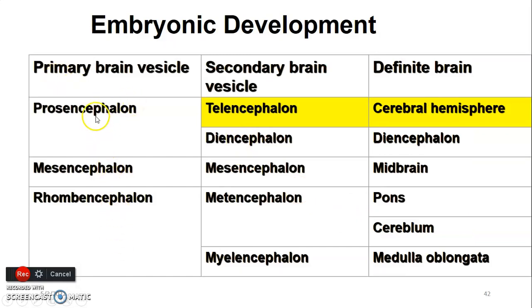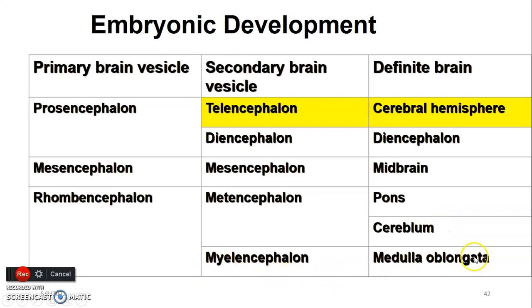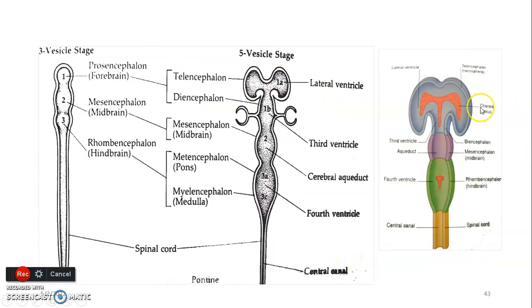Remember we had three primary vesicles: prosencephalon, mesencephalon, and rhombencephalon, which give us five secondary vesicles. From the prosencephalon you have telencephalon and diencephalon. The telencephalon gave us the cerebral hemispheres with cavities which are the lateral ventricles. The diencephalon gives us the thalamus and the cavity of the third ventricle. The mesencephalon gives us the midbrain and the cerebral aqueduct as its cavity. The rhombencephalon gives us metencephalon containing pons and cerebellum, providing the upper portion of the fourth ventricle, and the myelencephalon giving the medulla and the lower portion of the fourth ventricle.